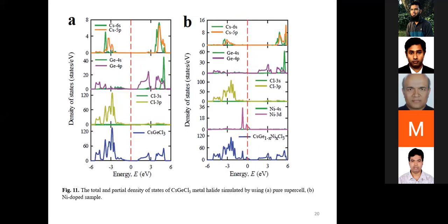The total and partial density of states for cesium germanium chloride metal halide, simulated using the pure cell and nickel-doped configuration, show that for nickel-doped cesium germanium chloride, additional states appear in the band gap region.